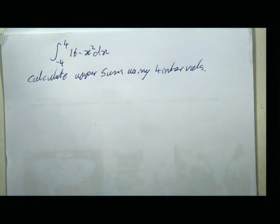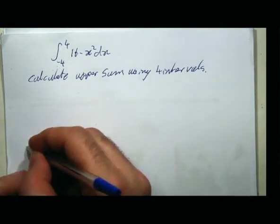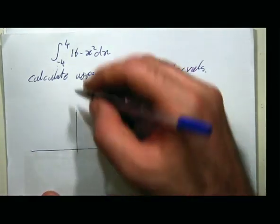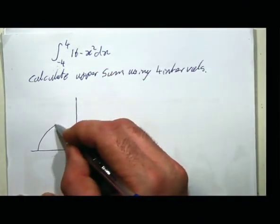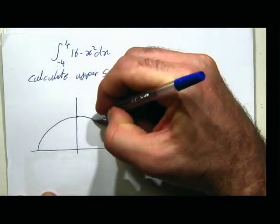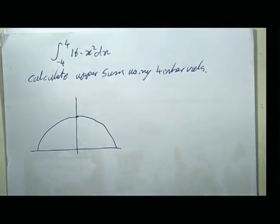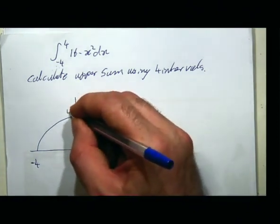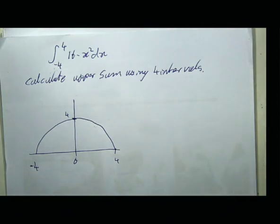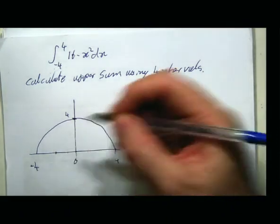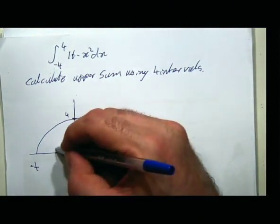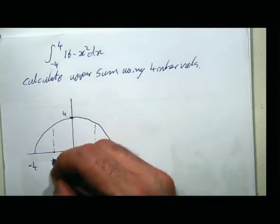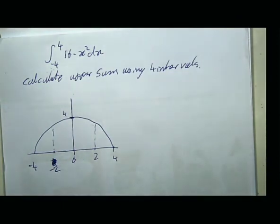First thing I'm going to do is draw a little picture of this function. I actually recommend drawing a really simple sketch of the function you're dealing with. This function looks like this: you've got -4 here, 0 here, 4 here, and the peak value here is actually 16. If I'm going to break this integral into 4 equal parts, I'll have endpoints at -4, -2, 0, 2, and 4.